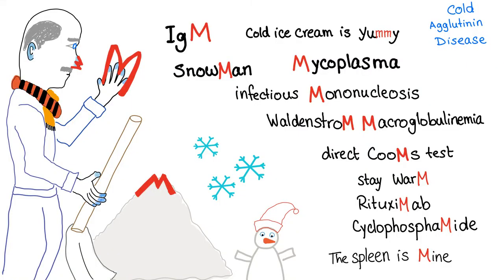Here's the mnemonic. You have a grandpa shoveling snow, having acrocyanosis — the nose is blue, fingertips are blue, the ear is blue. Cold agglutinin disease is IgM, so we will draw an M on the nose, fingertips, and a mountain of snow.